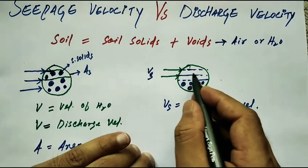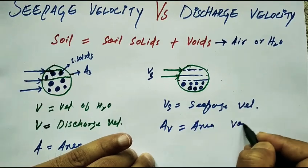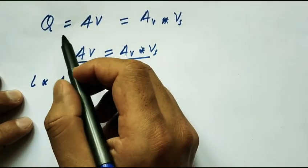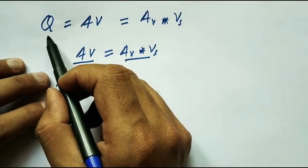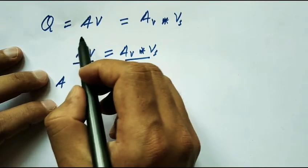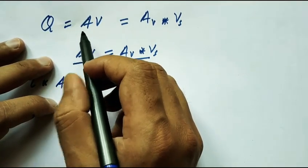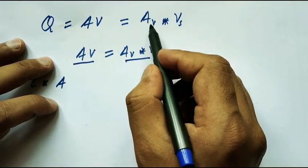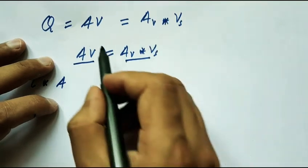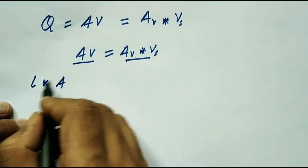Now we are going to derive the equation for seepage velocity. We know the equation of discharge is Q equal to area into velocity — this is for the gross area of the soil specimen, including soil solids plus soil voids. Secondly, Q is also equal to area of voids A_V into seepage velocity Vs — this is discharge through voids only. We equate these two equations.